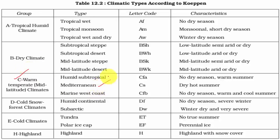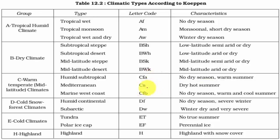Under C-type climates there are three important types: Mediterranean, humid subtropical (also called China type climate), and marine west coast climate (British type climate). The alphabet F stands for wet type with no dry season; A stands for warm or hot summers; and S stands for dry summers — typical to Mediterranean climate, which has warm dry summers and wet winters. The British type marine west coast climate is indicated by CFB, with comparatively lower temperatures and no dry season.